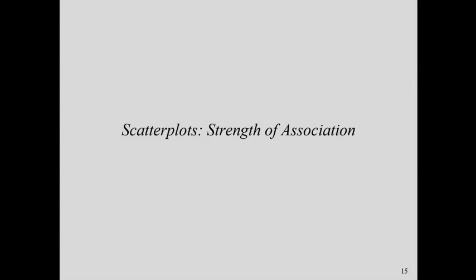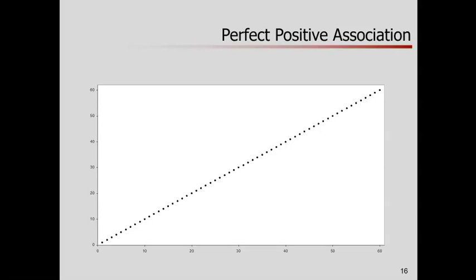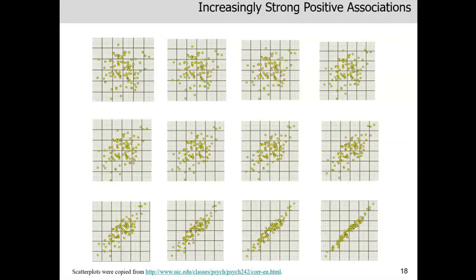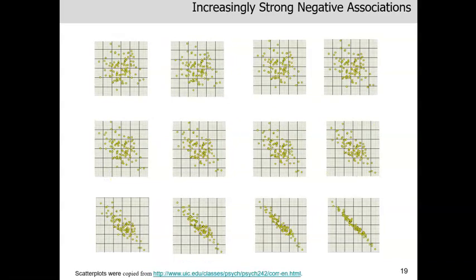The second piece of information from a scatterplot is how strong the association is. A perfect or maximally strong positive association means all points literally fall in a line. This series of plots is meant to represent increasingly strong positive associations — starting at the upper left, there's no association; moving across the rows from left to right, the points start to crystallize more firmly, clustering together so we can see the line. The same pattern holds for negative associations.